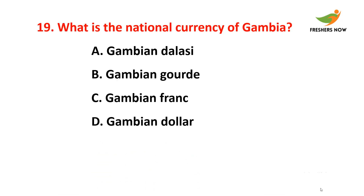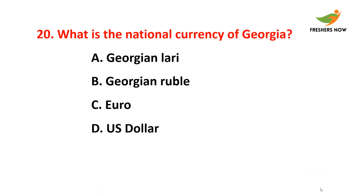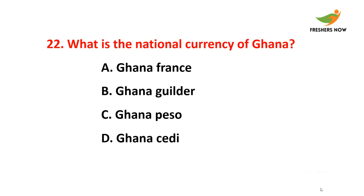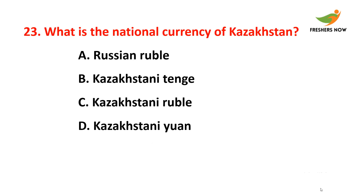Eighteenth question: What is the national currency of France? The answer is option D — euro. Nineteenth question: What is the national currency of Gambia? The answer is option A — Gambian dalasi. Twentieth question: What is the national currency of Georgia? The answer is option A — Georgian lari.